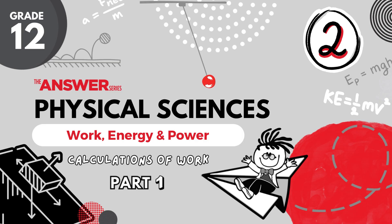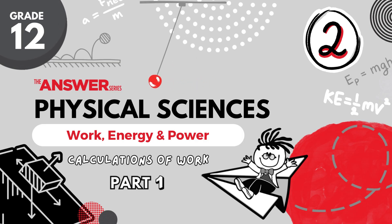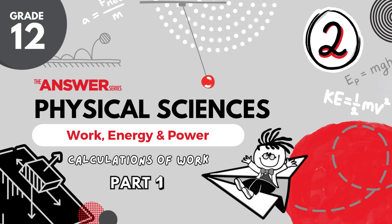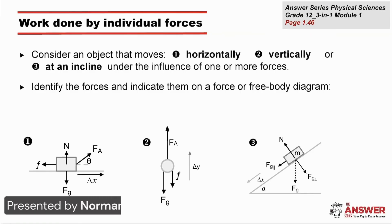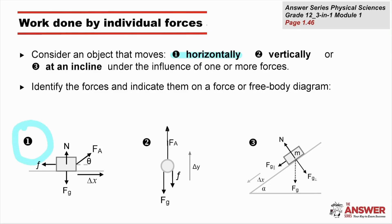Now we're going to have a look at objects experiencing those forces in three different positions. We'll use free body diagrams to be able to identify the forces clearly, and then we'll calculate the work done by each force acting on each object. Firstly, the object can be placed on a horizontal plane and can move from left to right, as shown with those forces acting upon the object.